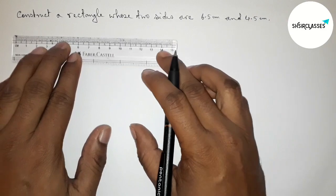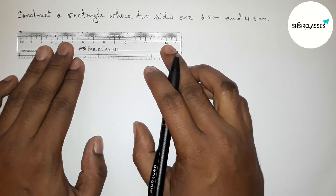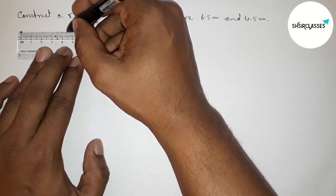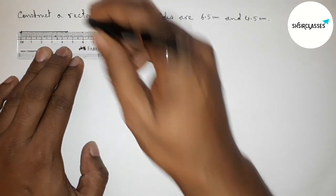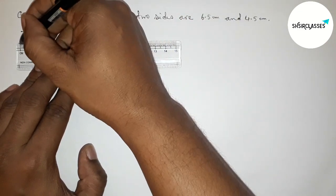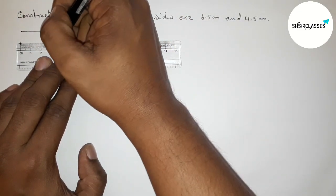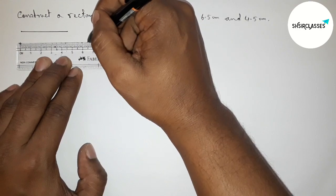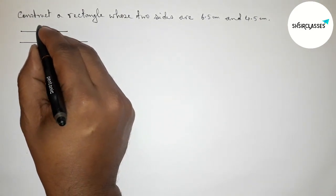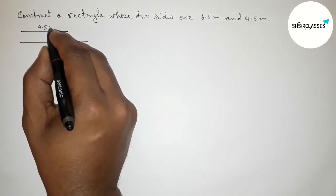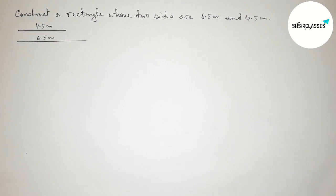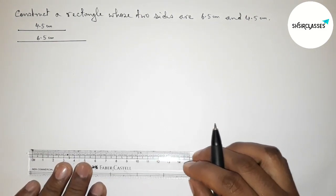First, drawing the two given sides. Drawing 4.5 centimeters — starting from zero, this is 4.5 centimeters. Then drawing another line of 6.5 centimeters — starting from zero, this is 6.5 centimeters. So this line segment is 4.5 centimeters and this one is 6.5 centimeters.